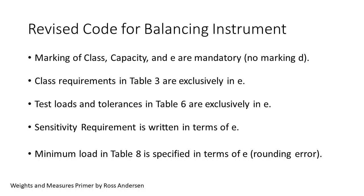Here's how the task group proposes to fix things. Marking for a balancing instrument consists of class capacity in E, no D. Class requirements in Table 3 are exclusively in E. Test loads and tolerances in Table 6 are exclusively in E. The sensitivity requirement will be expressed in E. Minimum load is specified in E since this is based on the rounding to the smallest increment of counterbalance weights, which is also tied to the sensitivity.